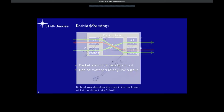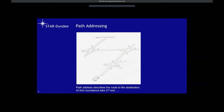Now I want to talk about the different addressing schemes. First, path addressing. The path address describes the route to the destination. Using a road system analogy — roundabouts with numbered exits — to reach a destination we just need to know which exits to take. In this example, we go out of exit two at the first roundabout, exit one at the second, and exit three at the third. So two, one, three is the route through the network.